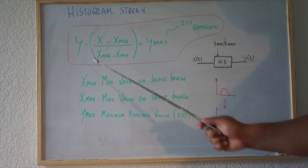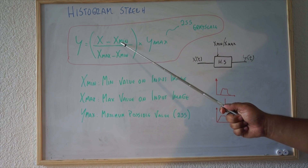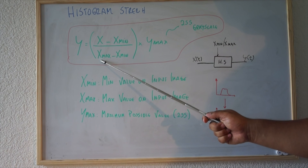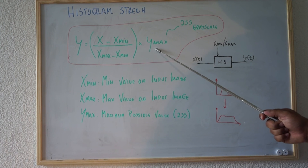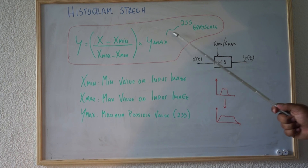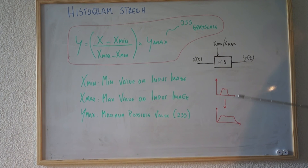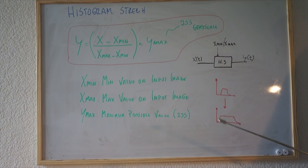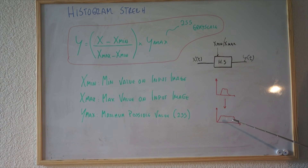So let's jump to the formula. The formula is quite simple — the output pixel is the input pixel minus the minimum value of the image, divided by the maximum value of the image minus the minimum value of the image. Multiplied by the maximum possible value that the image can get. In the case of grayscale, that's simply 255. As we said before, if the histogram of your image is not spread across all possible values, you have bad contrast, and this algorithm will linearly stretch that histogram.